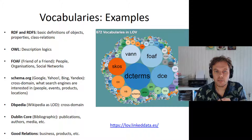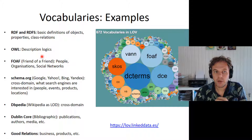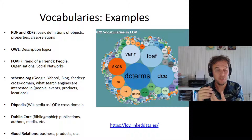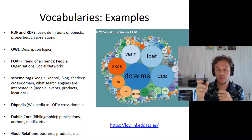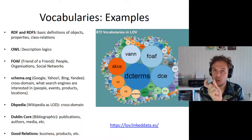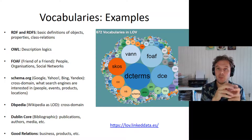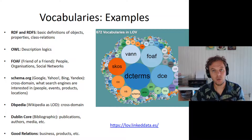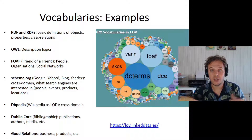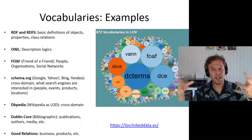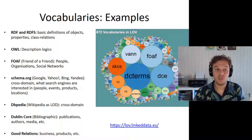There are all kinds of vocabularies out there — you can find them at lov.linkeddata.es, for example. There's the FOAF vocabulary, which defines all kinds of relations between people. For example, foaf:knows means I know you. Instead of coming up with my own predicate, I can reuse the existing one at http://foaf.org/knows. This is nice because everybody that publishes data using FOAF plays by the same rules, and already you have some data integration just by reusing other people's URIs.